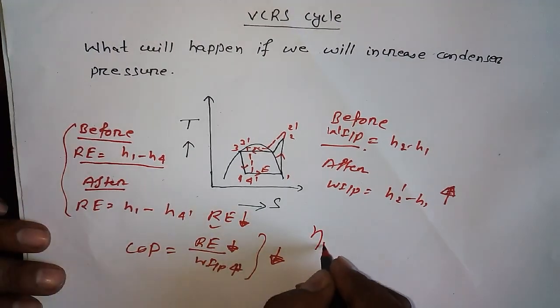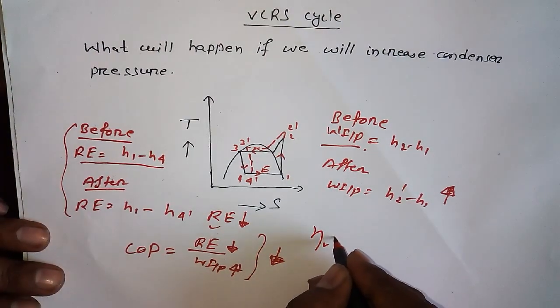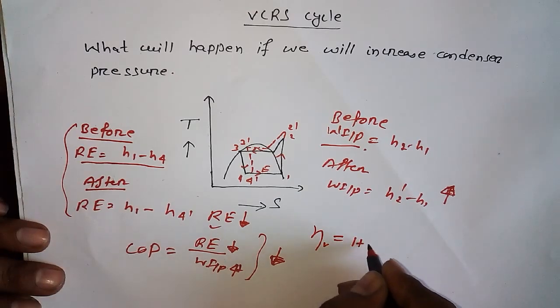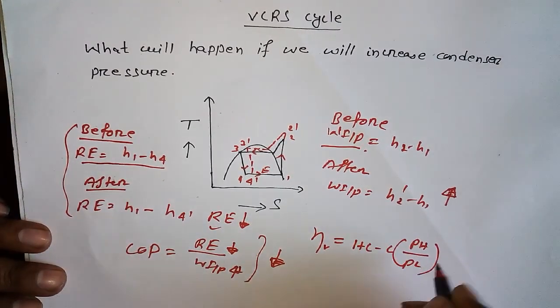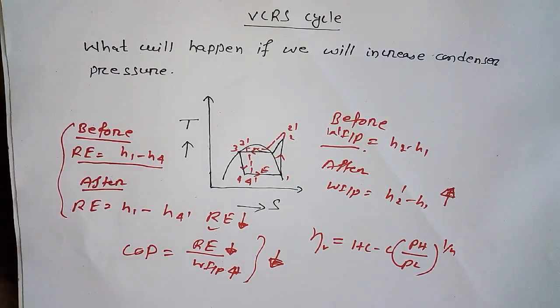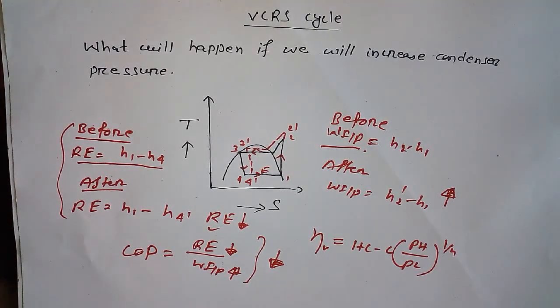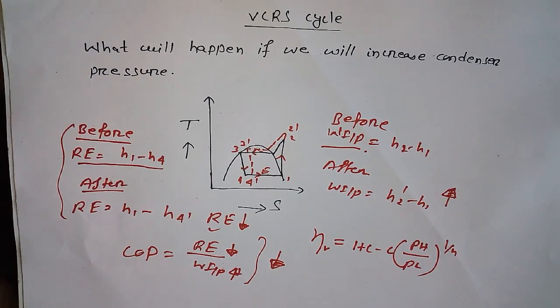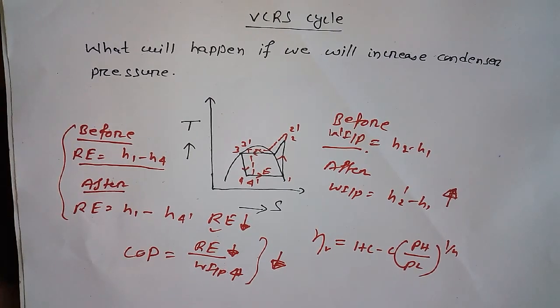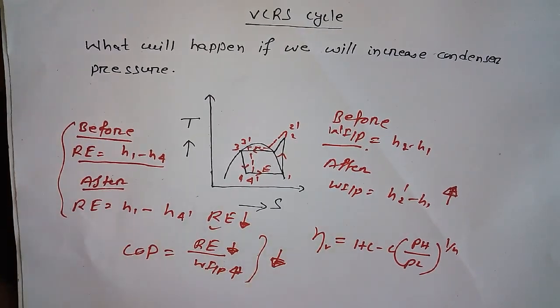That is volumetric efficiency. Volumetric efficiency formula is η_L = 1 + c - c(P_H/P_L)^(1/n), where c is clearance ratio. I have already explained it in my previous videos.